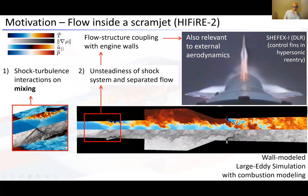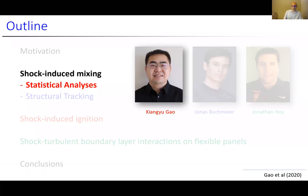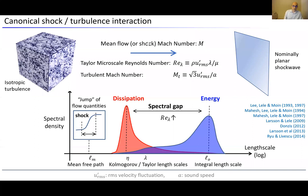We switch now to the study of shock-induced mixing in a canonical configuration — this is the work by Xian Yu Gao. The canonical configuration of shock-turbulence interaction consists of isotropic turbulence entering a nominally planar shock wave. The key physical parameters are the shock Mach number M, the Taylor microscale Reynolds number, and the turbulence Mach number. There are multiple important scales: the energy-containing integral length scale, the Kolmogorov scale where most dissipation occurs, and the intermediate Taylor microscale lambda.